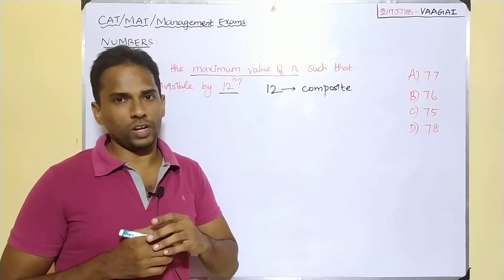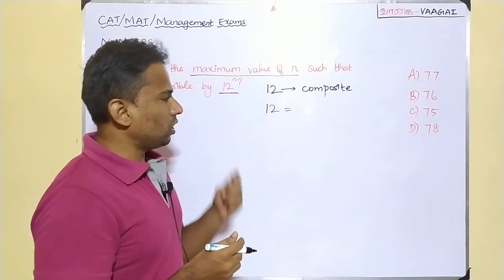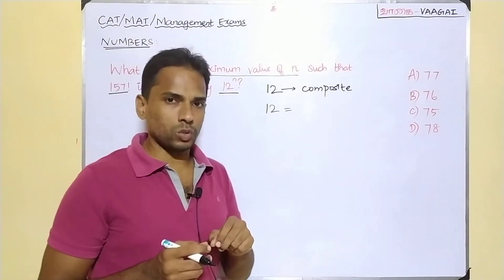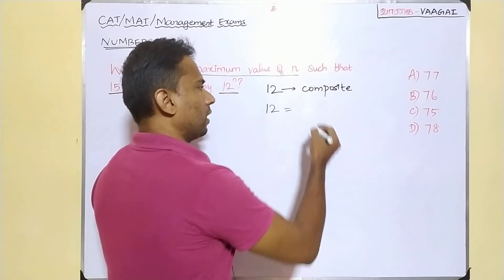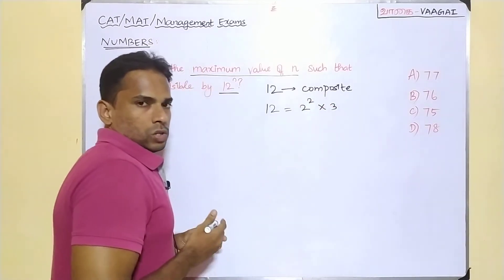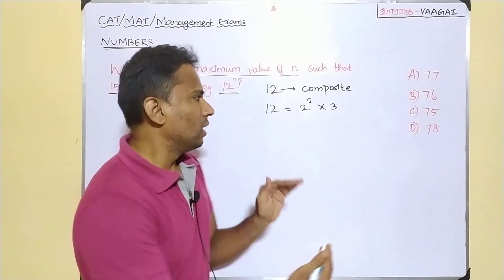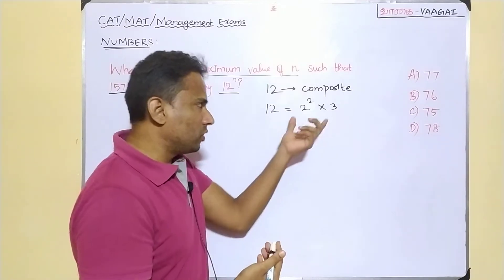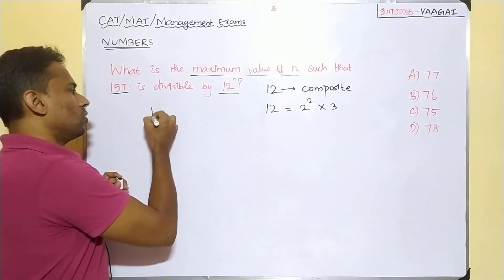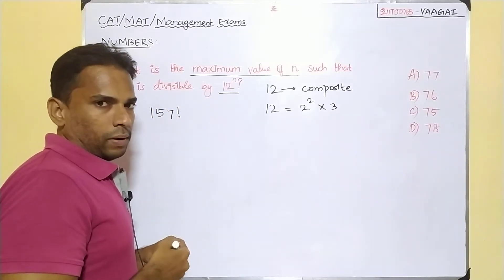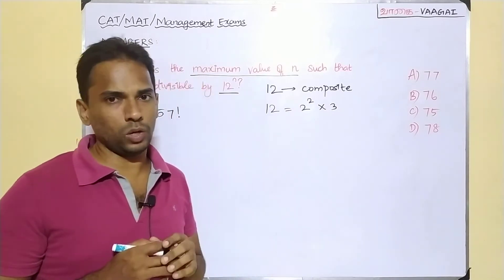Whenever we are given a composite number whose highest power we need to find, the first thing we need to do is prime factorize that number. 12 can be rewritten as 4 × 3, and 4 can be written as 2 squared. So 12 overall can be written as 2 squared multiplied by 3. We are going to find the highest power of the expression 2² × 3 available inside 157 factorial.